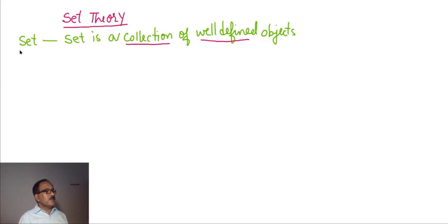First one is set. What is a set? A set is a collection of well-defined objects. Collection is crucial. Well-defined objects, easily identified objects, are known as well-defined objects.